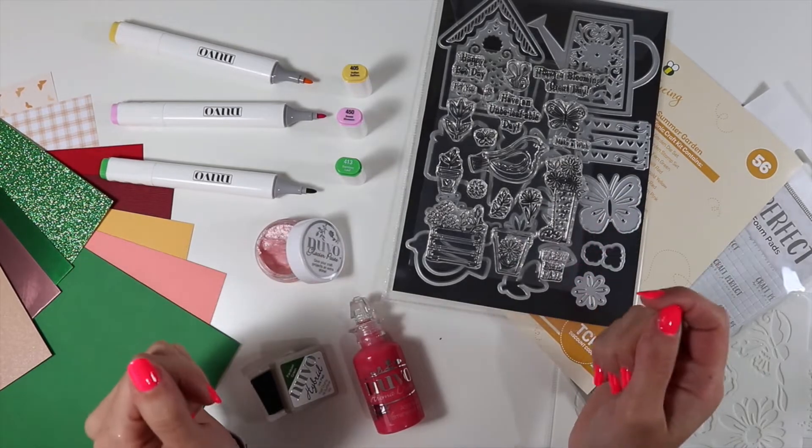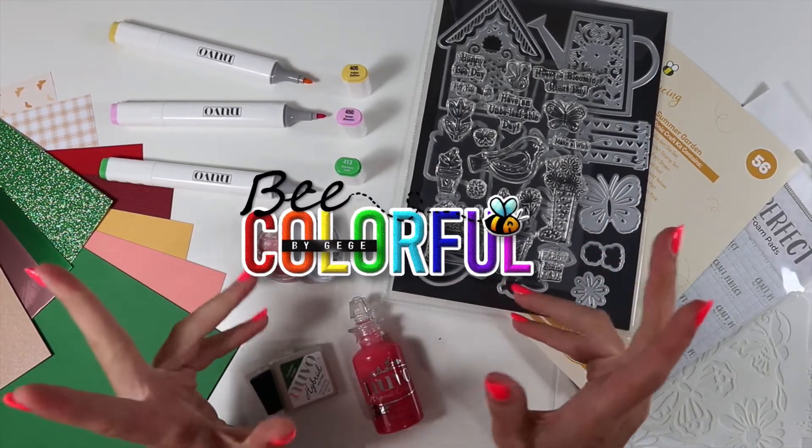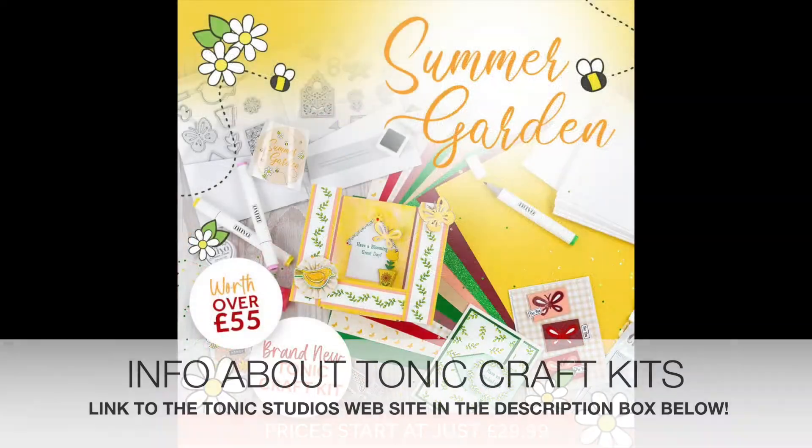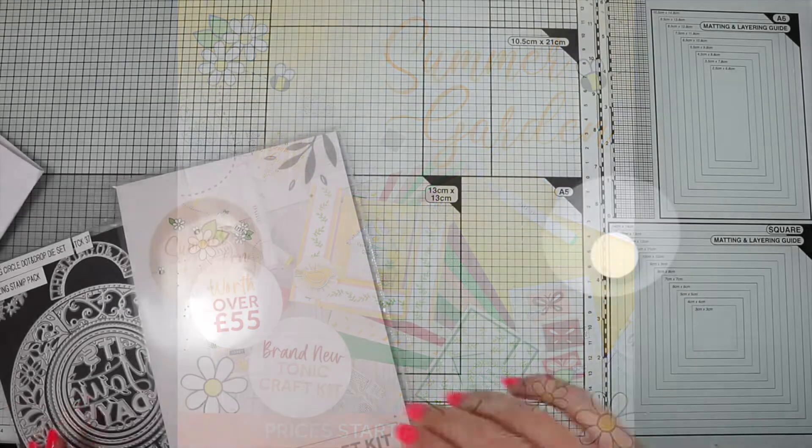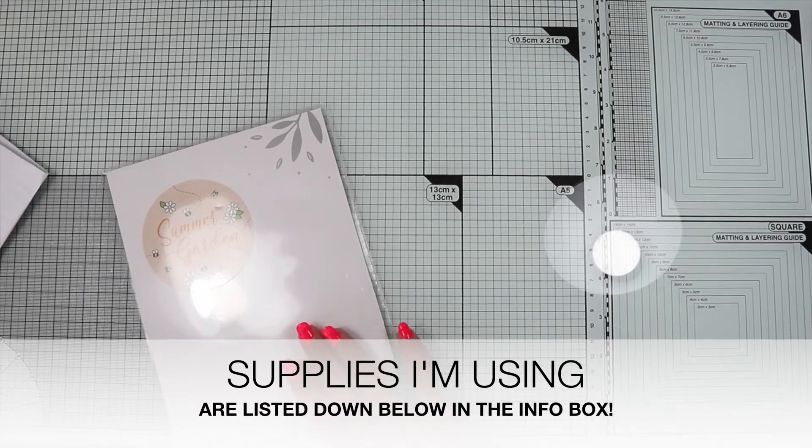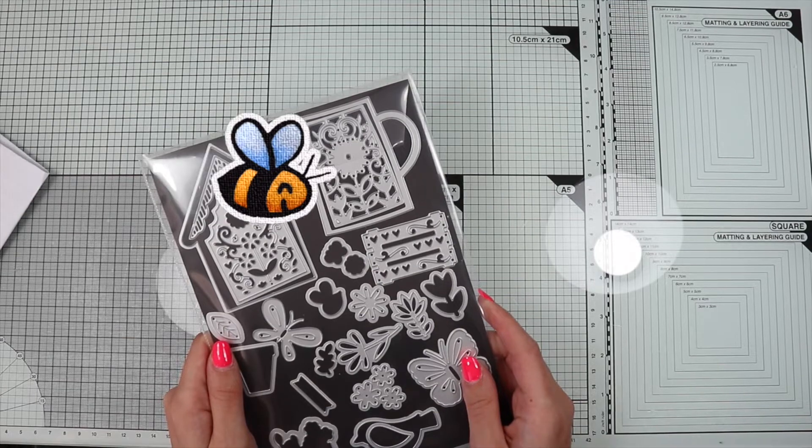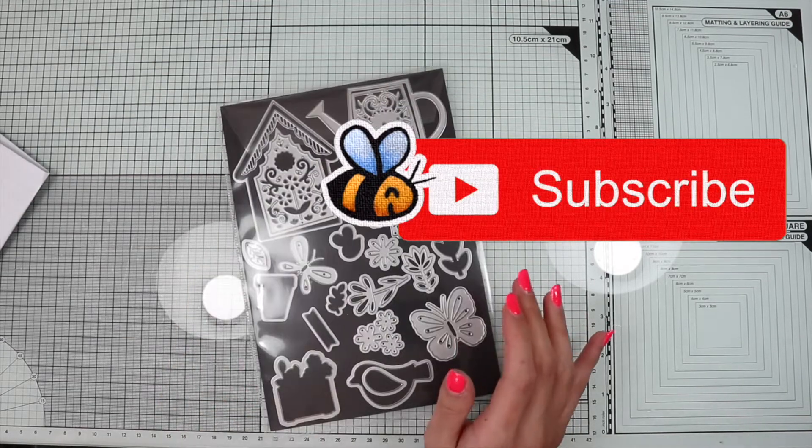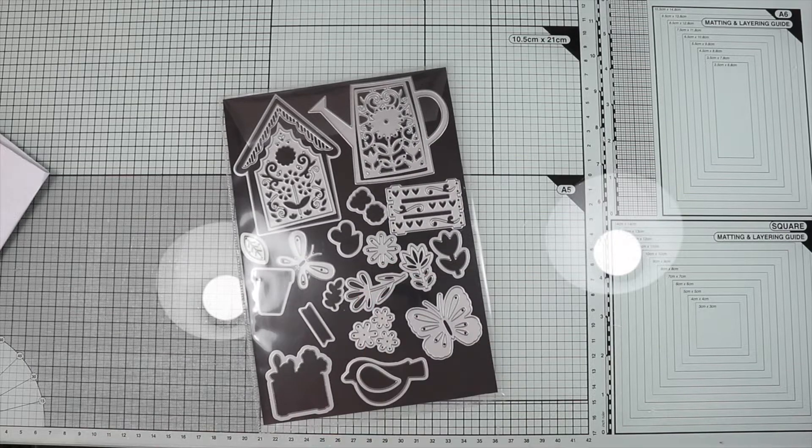Hi everyone, this is Gege and welcome or welcome back to Be Colorful for the latest video dedicated to the Tonic Craft Kit 56. Today I'd like to show you three ideas on how to use alcohol markers, in particular the three markers included in the kit. They will be three simple cards with sparkling colors. Are you ready? So let's get started.